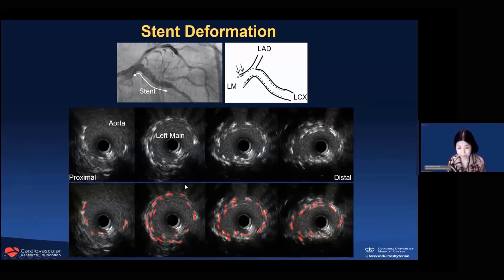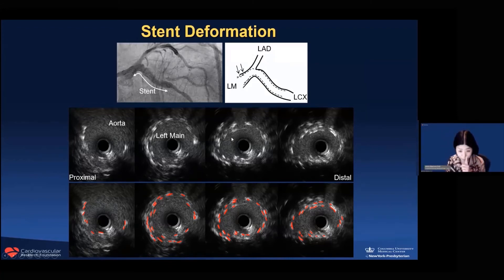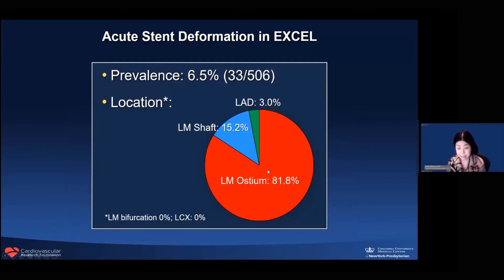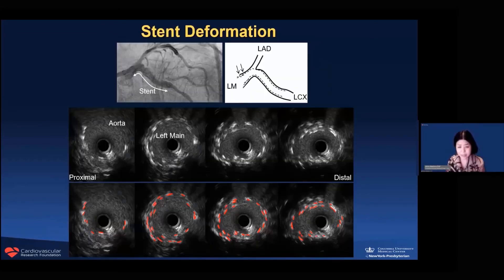Additionally, stent deformation can occur. This case had a lesion at the circumflex ostium to the left main, which was protected. We placed one stent from the circumflex into the left main. At the ostium of the left main, IVUS showed a double layer of stent struts—despite only one stent being placed. This is stent deformation, and you must recognize it. In the EXO trial, stent deformation was seen in 6.5% of cases and correlated with outcomes. If unrecognized, the in-stent area is smaller than intended because the stent is deformed, and you may also miss lesion coverage because the stent is shorter than its original length. Recognition and additional treatment are very important.